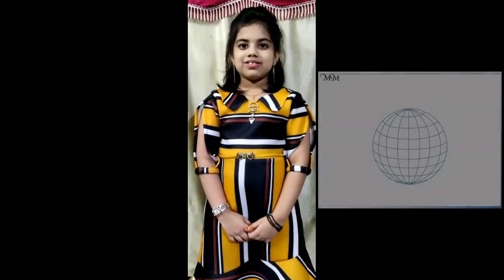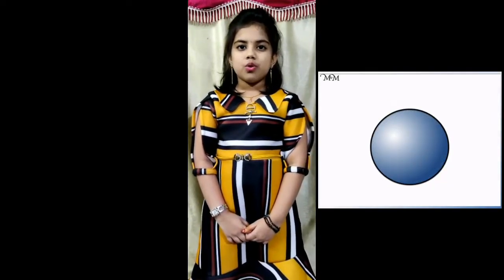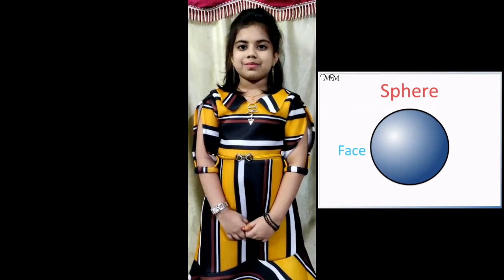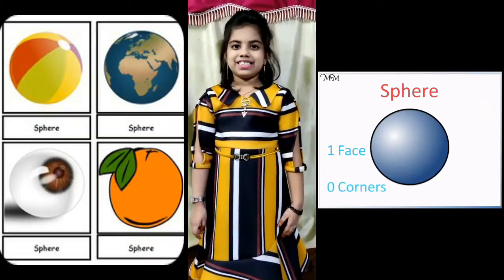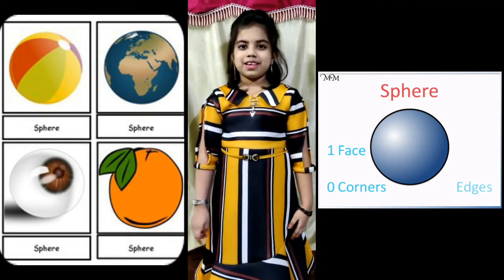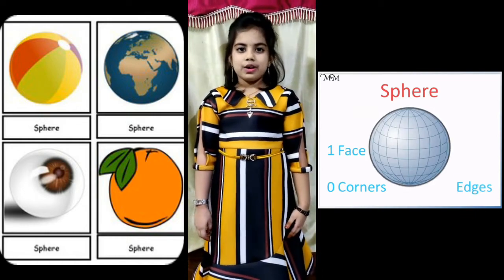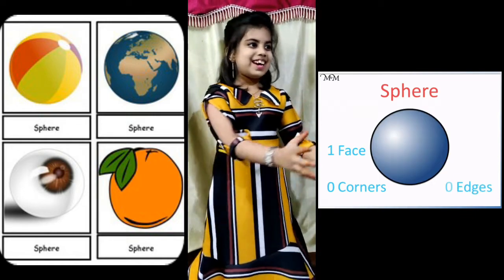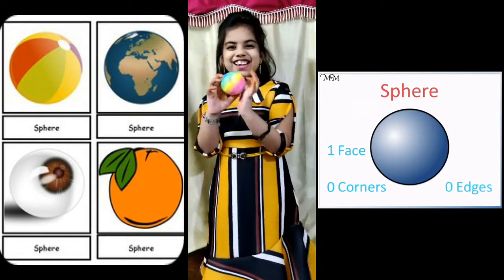The last one is a sphere. A sphere has only 1 curved surface. It has neither corners nor edges. Examples of a sphere are a globe and a ball.